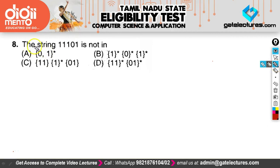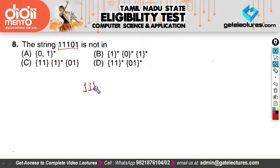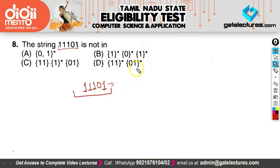The question asks: the string 1 1 1 0 1 is not in which regular expression? We are given a few regular expressions and have to tell which one cannot derive this particular string. If you look at the string 1 1 1 0 1 carefully, there are 1, 2, 3, 4 — four 1's — which means an even number of 1's.